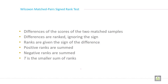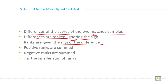The test requires the differences of the scores of the two matched samples. The differences are then ranked, ignoring the sign. Ranks are then given the sign of the difference. Positive ranks are summed and negative ranks are summed, and T is the smaller sum of the ranks.